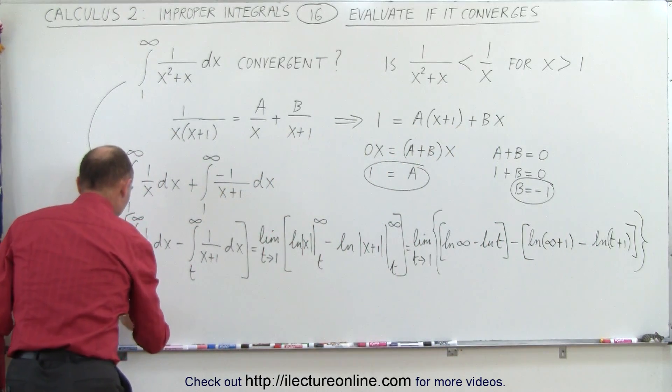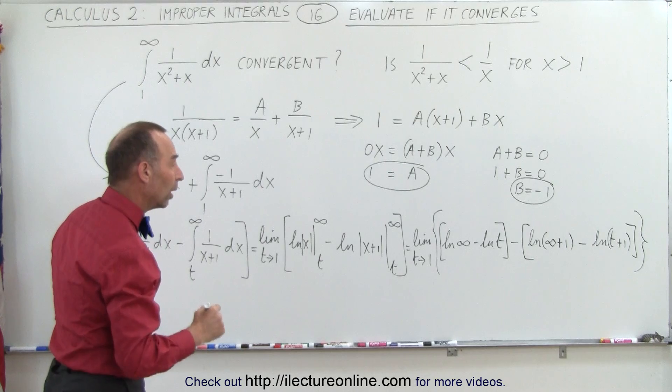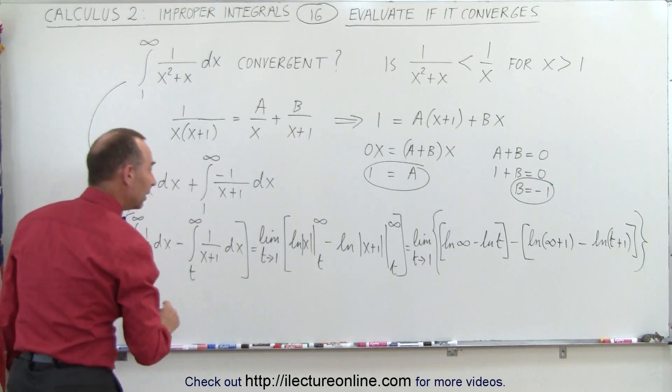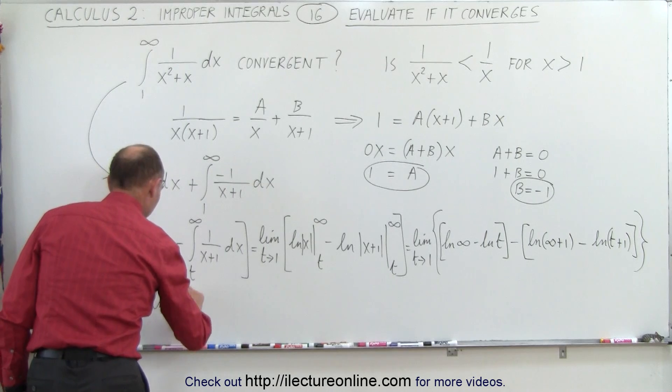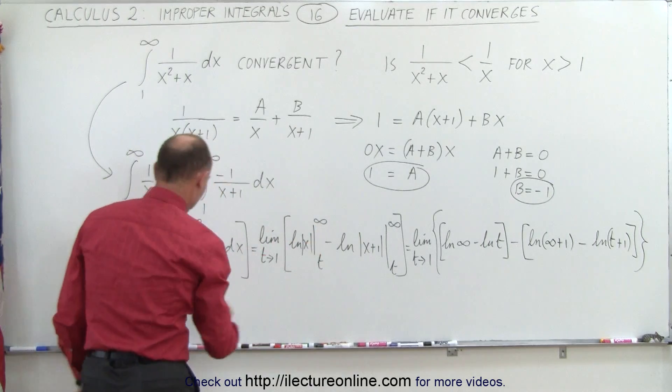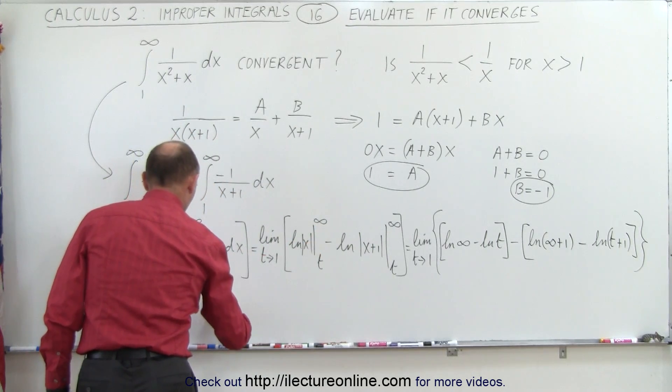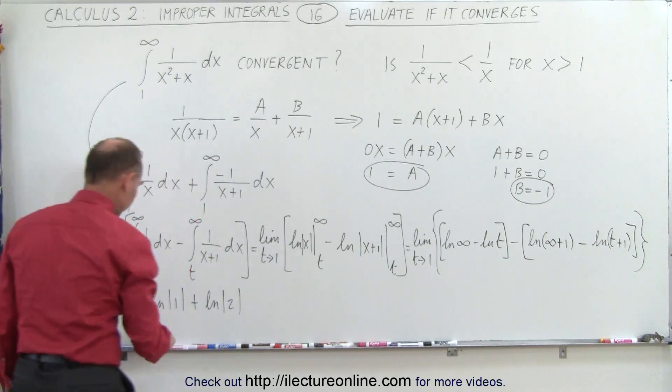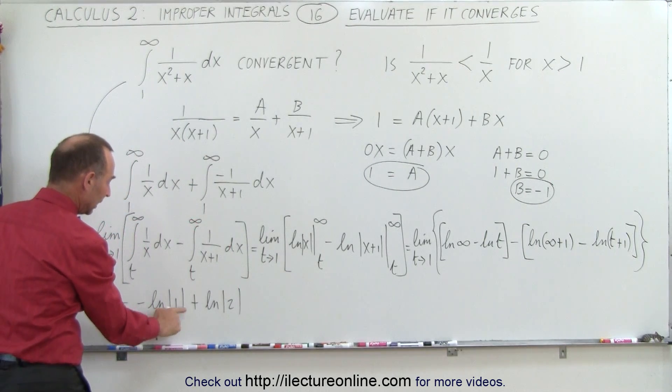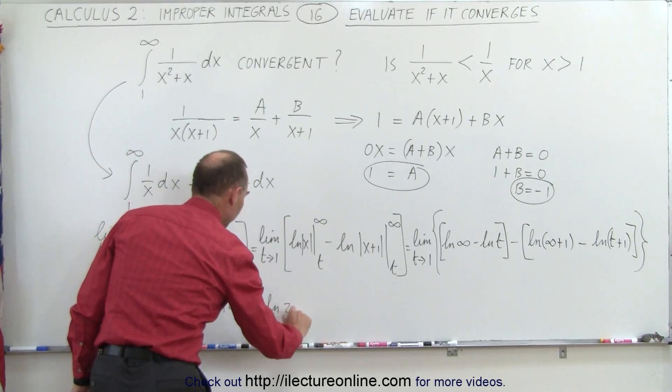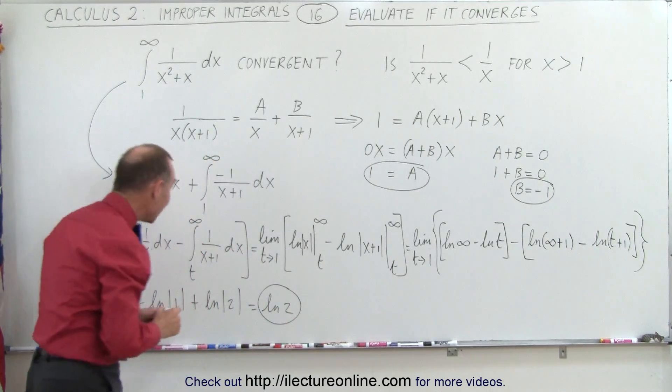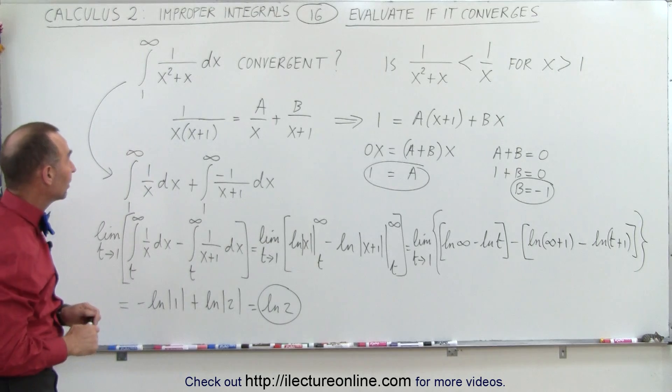So this means that when I let t go to 1, I get the following: I have minus the natural log of 1, and the minus times the minus which would be plus the natural log of 2. And of course the natural log of 1, that will be equal to 0, so this becomes the natural log of 2, which is the ultimate answer of our initial integral.